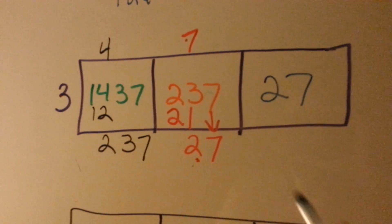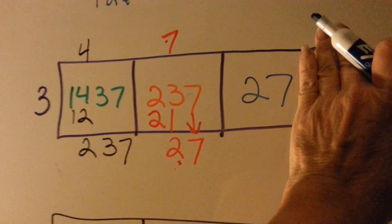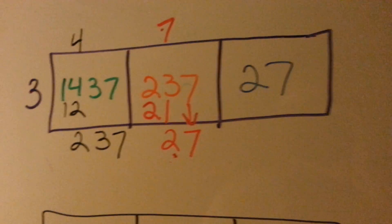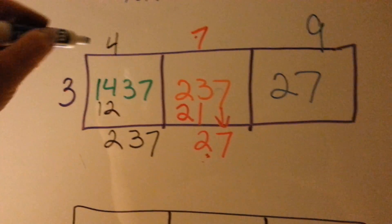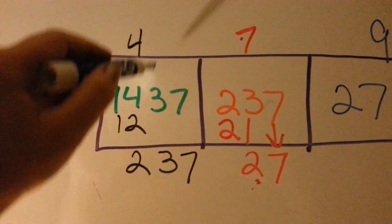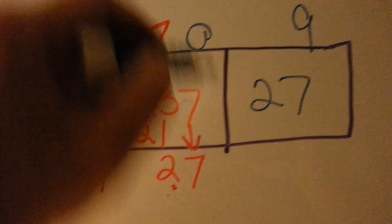And we ask ourselves, can 3 fit into 2? No. Can it fit into 27? Yes. 3 times 9 is 27. So we put the 9 above the 7, and then all the digits up here that have nothing above them become zeros. See that?